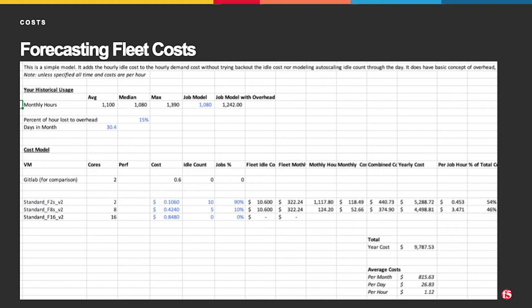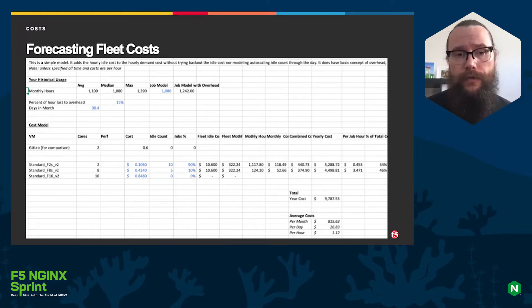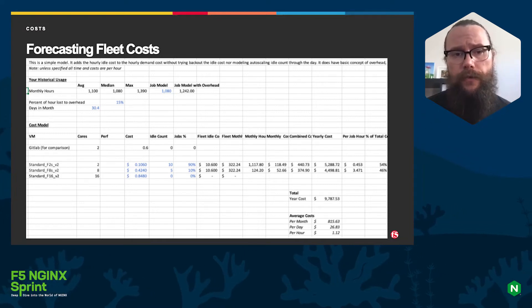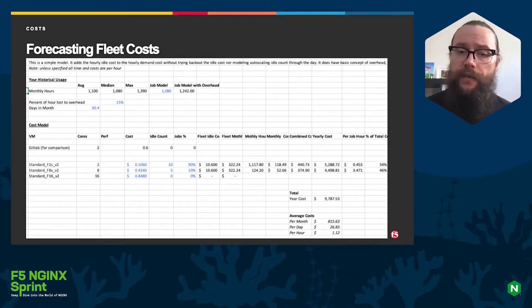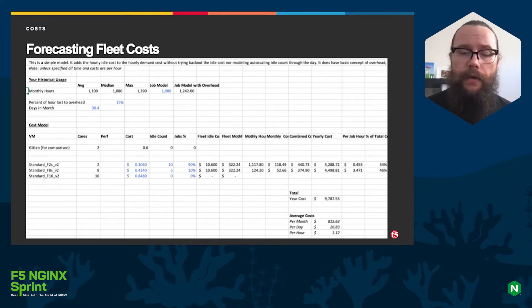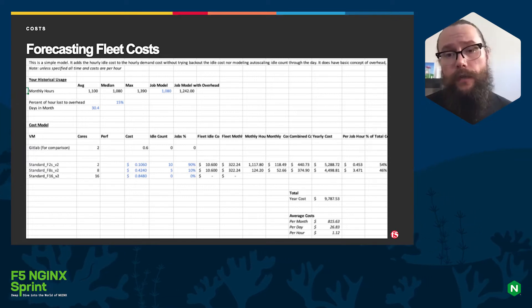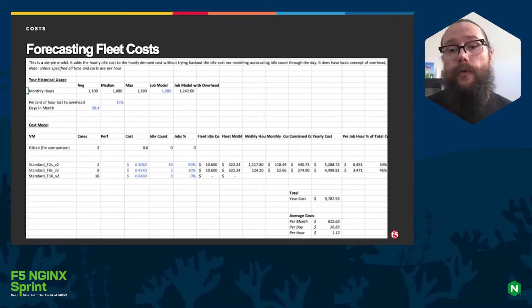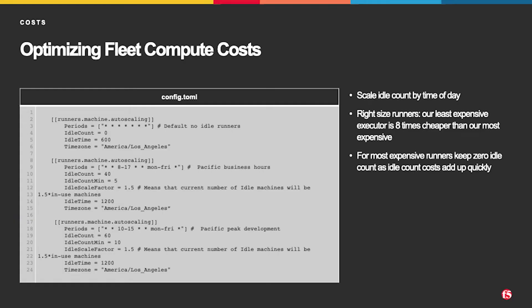The other extra-large runner we're saying zero percent — that's for one-offs. What's important to think about is also your idle count, which allows you to service your jobs quickly but costs money, and that's where we model overhead. We're saying 15% of your VM hours are lost to overhead. In this simple example, a thousand hours with 90% of jobs on the smaller runner with an idle count of 10 works out to about $800 a month. The per-job hour ends up being about 45 cents fully loaded for the smaller runner, but $3.40 for the larger runner — much more expensive than GitLab's runner cost.